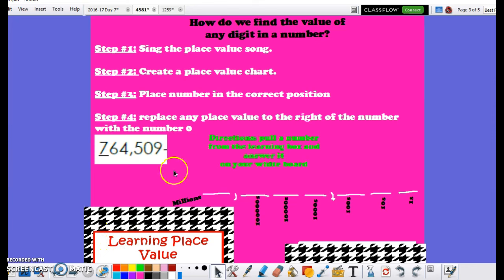Now that I have completed steps one and two, and have created my chart as you see down here, starting with the ones, followed by the tens, then the hundreds, followed by thousands, ten thousands, hundred thousands, and millions,